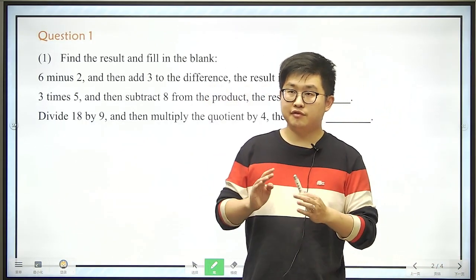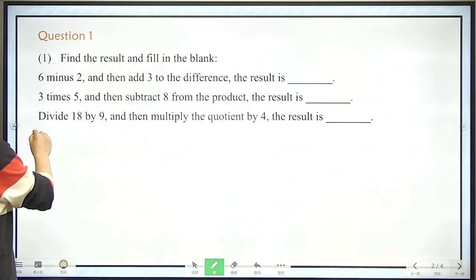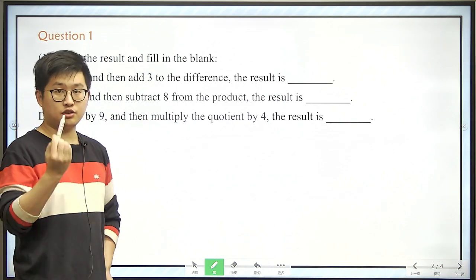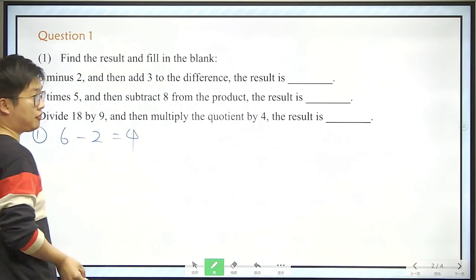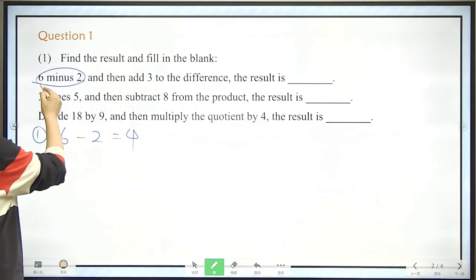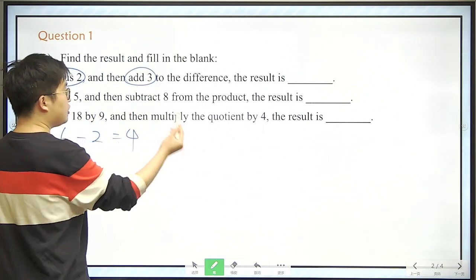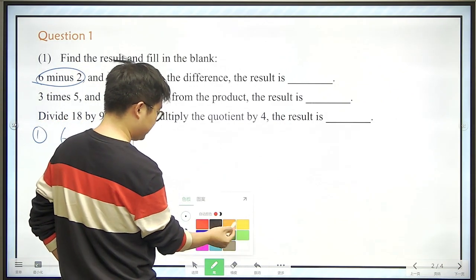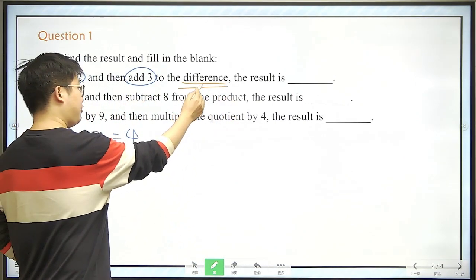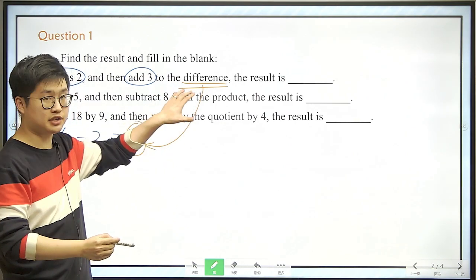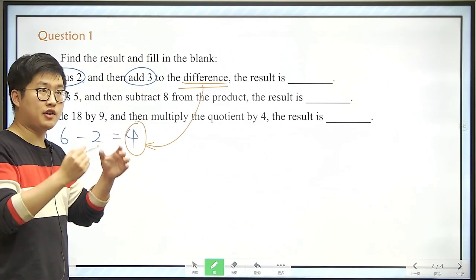The first question is very simple, and let's take a look at it. The first one is 6 minus 2, that is 4, of course. And then what should we do? We should add 3 to the difference. So what is a difference? 4 here is the difference, right? Because difference means the result of a minus, or we say, of a subtraction.